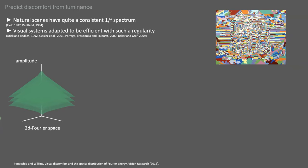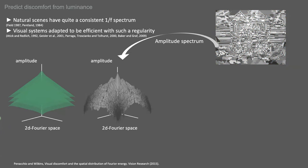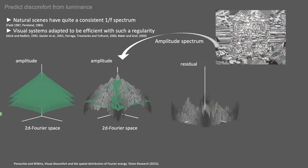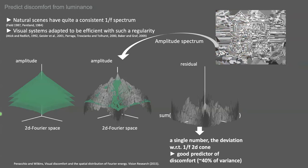So to see that, we can compute the amplitude spectrum of the luminance profile of an image and we can find the best fit amongst all these families of spectra of natural scenes. Once we have the best fit, we can compute the residuals, that's the difference, and sum all the residuals to give a single number. So it turns out that this single number is a very good predictor of the visual discomfort from luminance, explaining about 40 percent of the variance in judgment of discomfort.